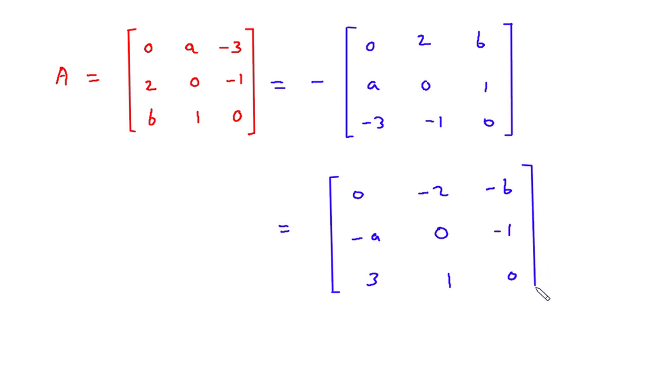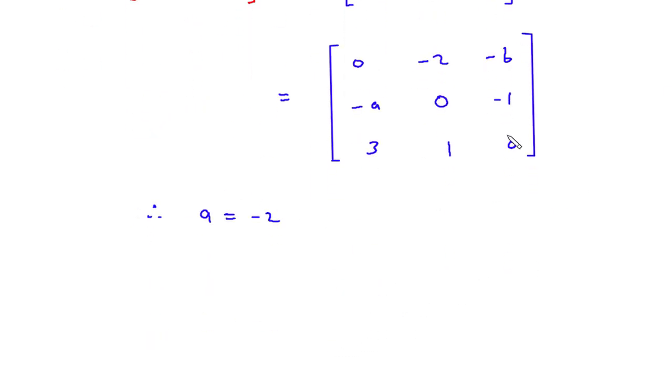Now we can compare LHS and RHS, so here we can see a is equal to minus 2, so therefore a is equal to minus 2 and here we can see b is equal to 3, so therefore b is equal to 3.